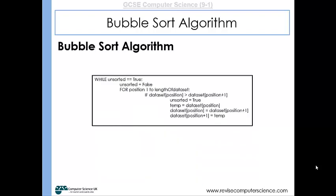Here's an example of the bubble sort algorithm. While the array is unsorted, we are iterating through using a for loop each item within the data set, and if the item that we're looking at is greater than the next item, then we swap the items around.